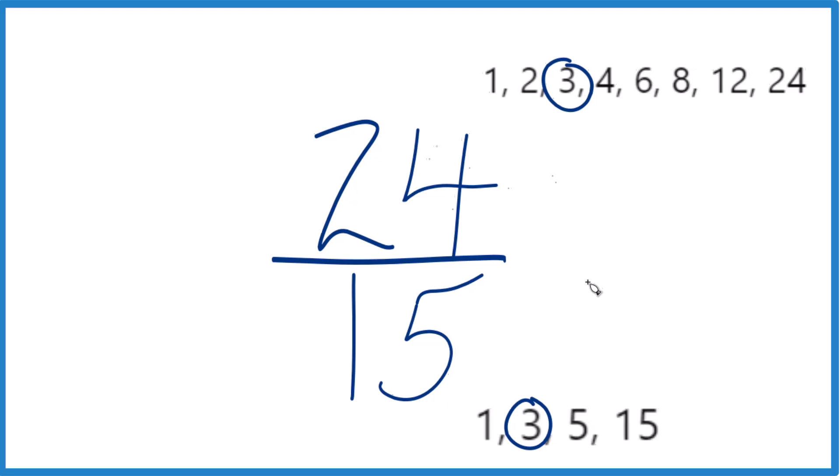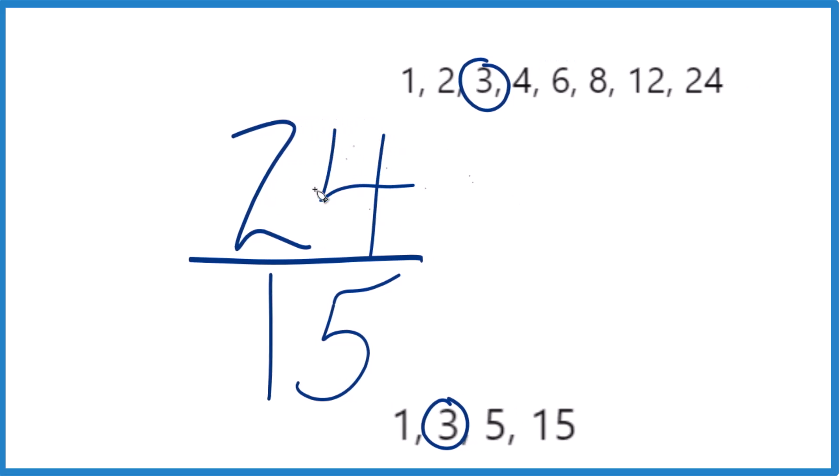So it looks like 3 is the greatest factor, the greatest common factor between 24 and 15. Divide 24 by 3, and 24 divided by 3 is 8, because 8 times 3 is 24. And 15 divided by 3 is 5, because 3 times 5 is 15.